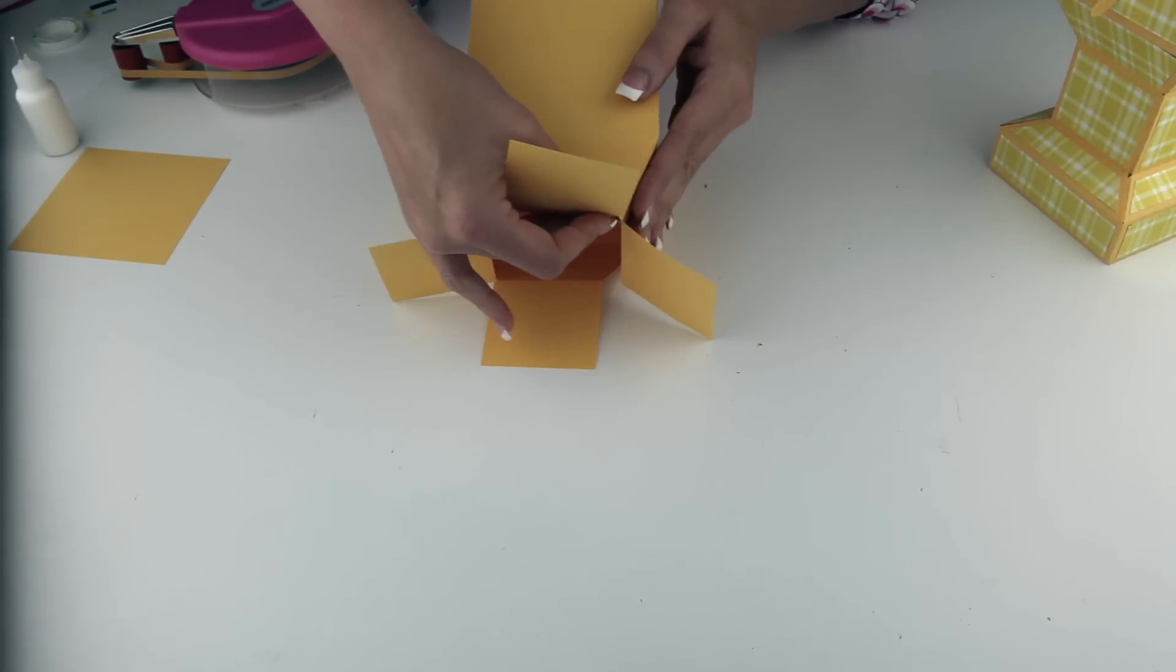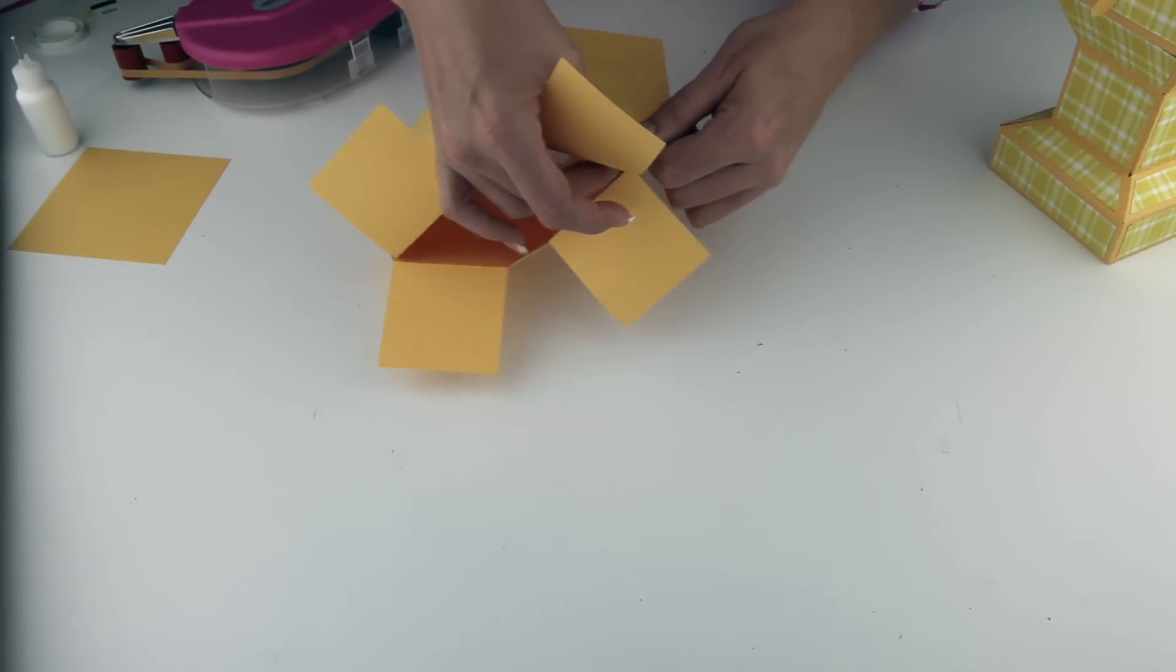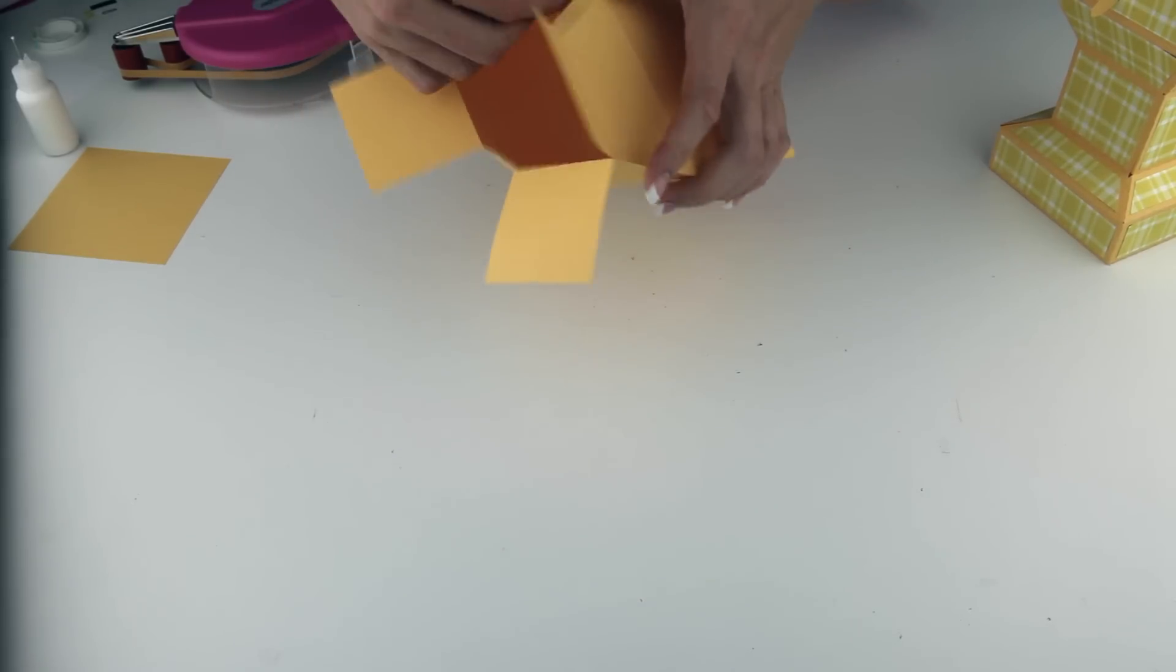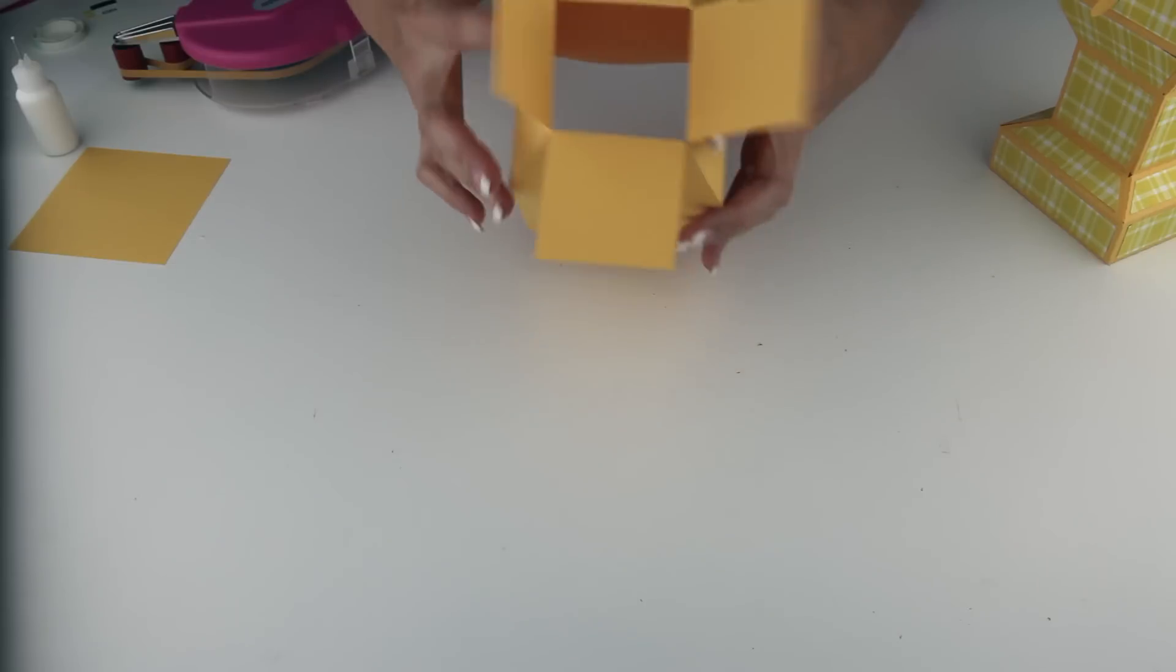So now we just need to glue those little angled tabs in place. I am just going to fold these back out of my way for a minute, but they will go the other direction here in a minute. Kind of pinch those corners in place on the first couple. So there you have it.